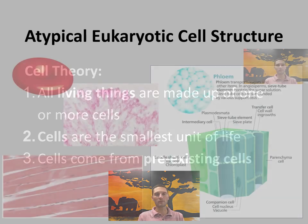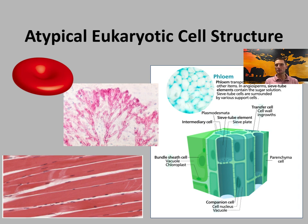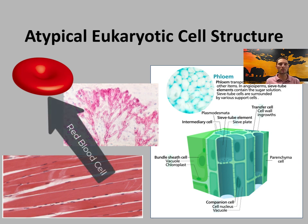One exception is red blood cells. They do not have a nucleus and are much smaller than a typical cell of 10 to 100 microns. They are also more flexible, which makes sense as they travel through small vessels to transport oxygen. They cannot repair themselves and have a short lifespan of 100 to 120 days.